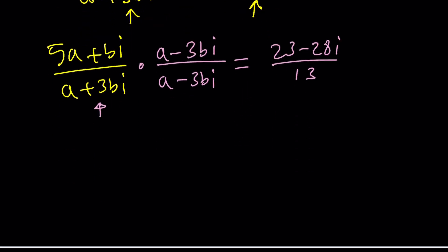Now let's go ahead and simplify this by using the distributive property. 5a times a is 5a squared and then this is minus 15abi. This is where we get the abi. I think that's what confused me. Plus abi and then minus 3b squared i squared.